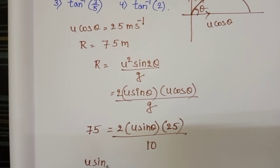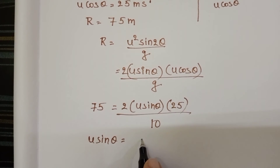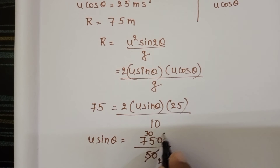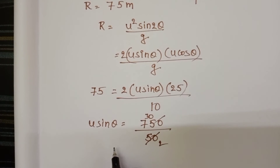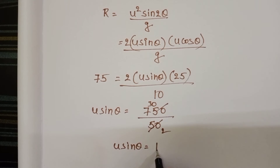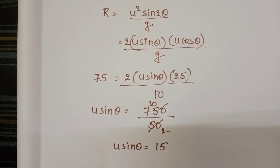From this, u sin θ equals 750 divided by 50, so u sin θ equals 15.